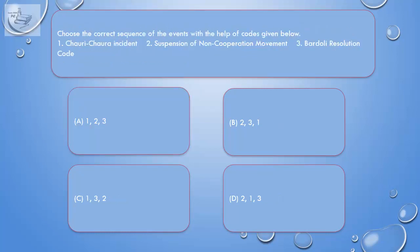Question: Choose the correct sequence of events with the help of codes given below. 1. Chauri Chaura Incident. 2. Suspension of non-cooperation movement. 3. Bardoli Resolution. Code: A. 1, 2, 3. B. 2, 3, 1. C. 1, 3, 2. D. 2, 1, 3.